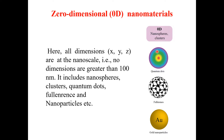Zero-dimensional materials include nanospheres, nanoclusters, quantum dots, fullerenes, and nanoparticles. The most well-known nanoparticles are gold nanoparticles. In short, zero-dimensional nanostructures are nanomaterials whose all dimensions — X, Y, and Z — are smaller than 100 nanometers.